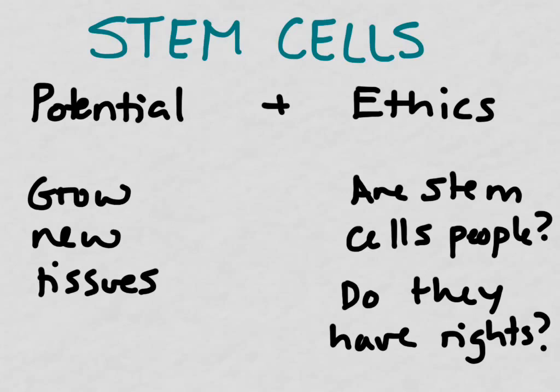It's also worthwhile to think about the ethics of stem cells. Because totipotent cells have to come from the union of an egg and a sperm, that union of an egg and a sperm, or that zygote, could ultimately grow into a person someday.